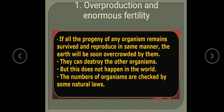Let us start with overproduction and enormous fertility. Living organisms have a strong desire to produce their own progeny to continue their race, so they reproduce. They have a high fertility rate and produce many more offspring than can possibly survive, causing overproduction. For example, a single salmon fish produces about 30 million eggs in a season, and a pair of flies can produce more than a billion eggs in just three months. Due to this enormous fertility, there is overproduction of eggs and progeny.